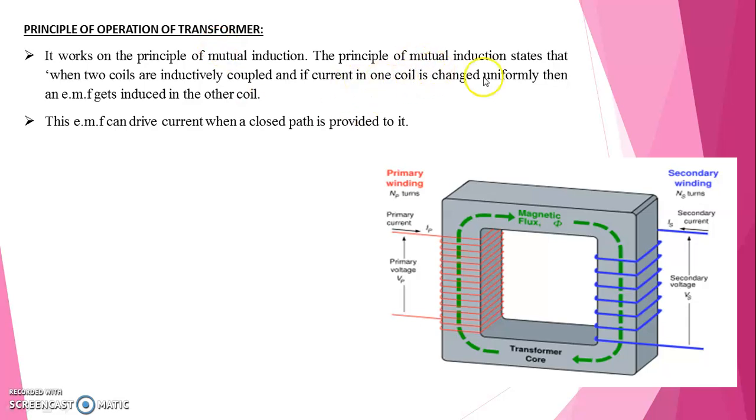The principle of mutual induction states that when two coils are inductively coupled or magnetically coupled, and if current in one coil is changed uniformly then an EMF gets induced in the other coil. This EMF can drive current when a closed path is provided to it.